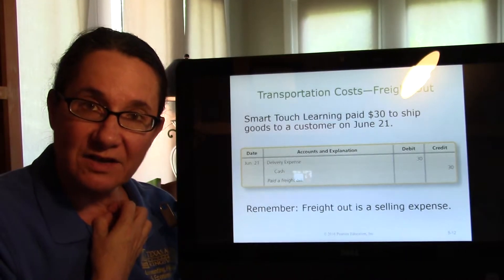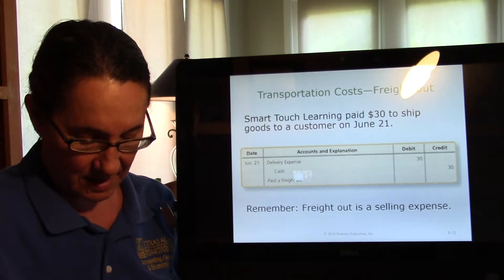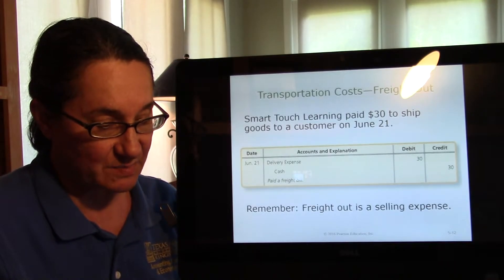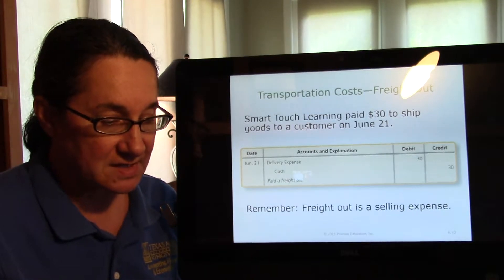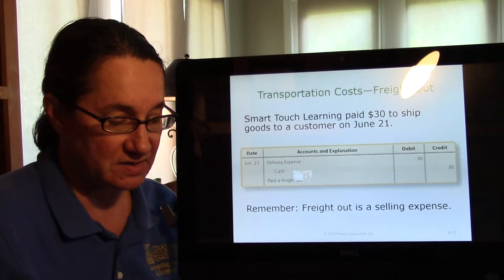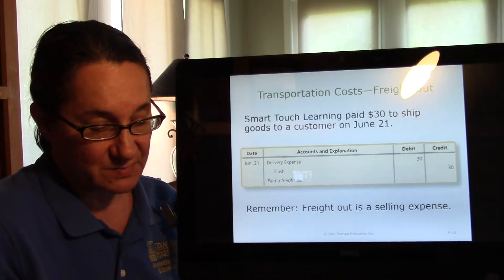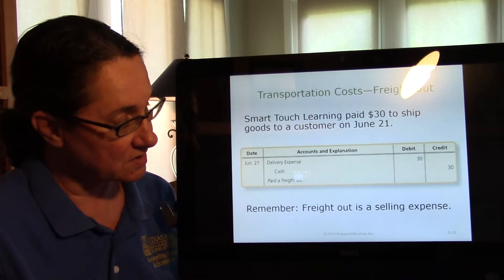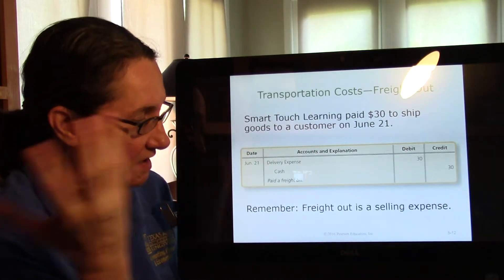Remember, transportation costs happen when you make a sale, so you have to figure out who's going to pay for it. When the seller pays for freight out, we call that freight out — it's a selling expense. We keep it separate and call it delivery expense. In this case, on the sale there was a $30 charge to deliver it and Smart Touch paid it — they didn't make the customer pay. Freight out means going out; freight in is when you make a purchase, freight out is when there's a sale. Freight out expense is where the seller pays freight charges to ship goods to customers. So you record delivery expense and decrease cash.